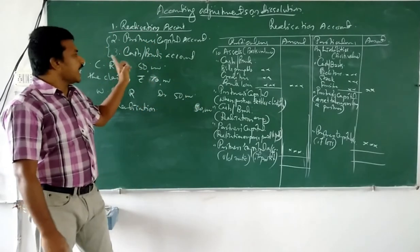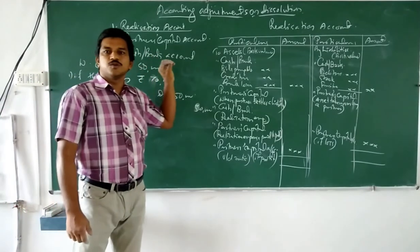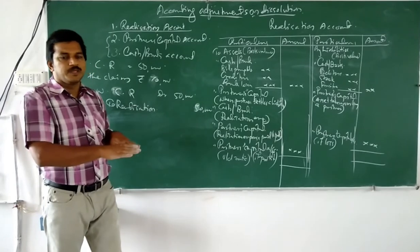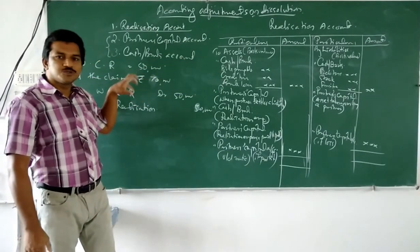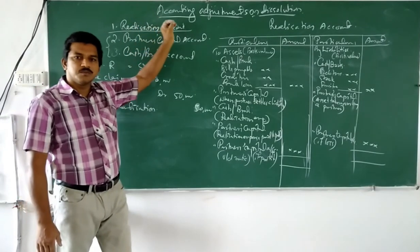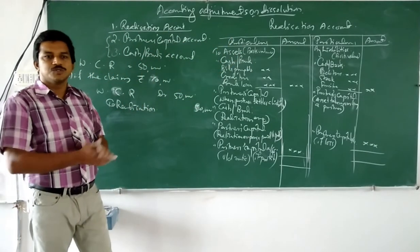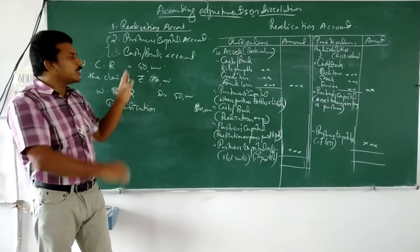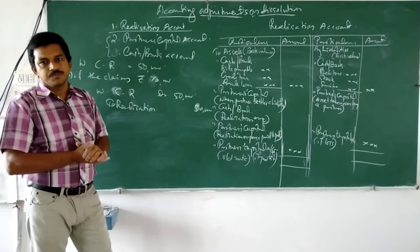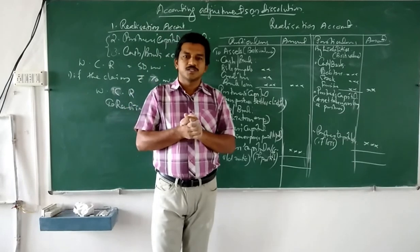In the cash account, this is the final account prepared while solving dissolution accounts. Instead of a balance sheet, the cash account will tally equally on both sides. The opening cash balance from the balance sheet is transferred here, and all cash entries are transferred to the cash or bank account. Finally, the cash account will be equal on both sides.